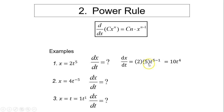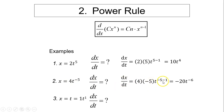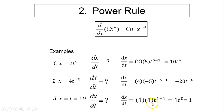So the derivative is 2 times 5 times t to the 5 minus 1, which becomes 10 times t to the fourth. Next, x equals 4 times t to the negative 5: derivative is 4 times negative 5 times t to the negative 6, giving negative 20t to the negative 6. Last, x equals t — here c is 1 and n is 1, so the derivative is 1 times 1 times t to the zero, which equals 1.